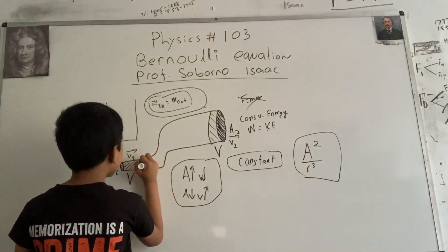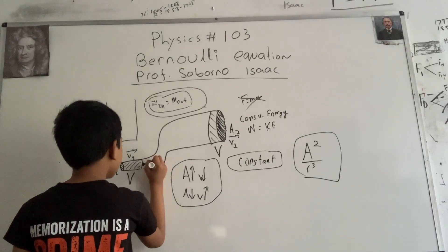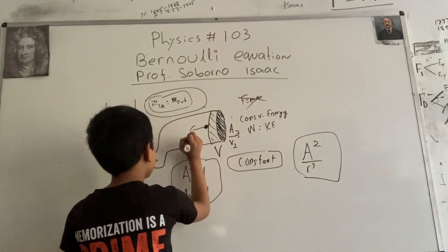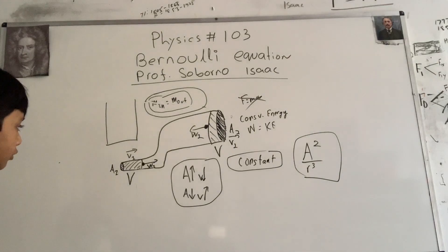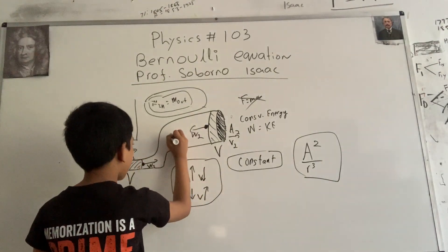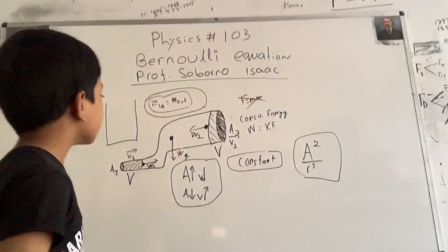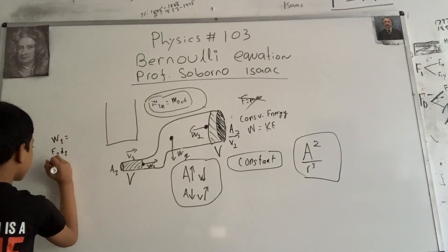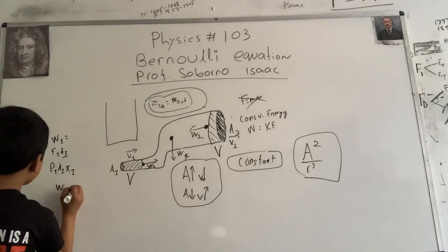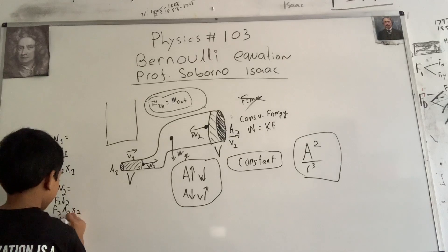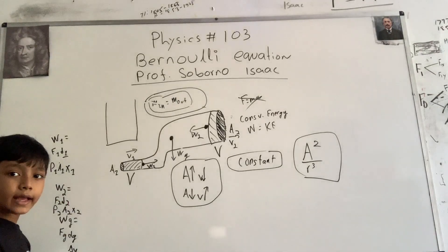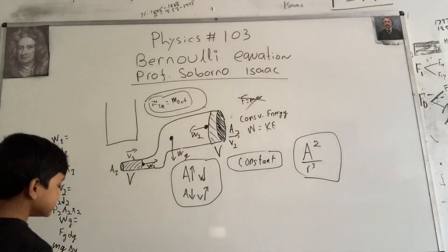First, there's all the work being put in at entry — we'll call that W1. And then there's all the work going out the other end — we'll call that W2. W1 is going to be equal to F1·A1, and the same applies to W2. The work expression is going to be F·V·ΔY, where ΔY is the displacement.